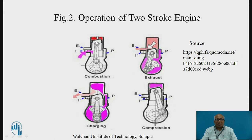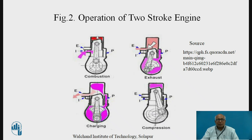Referring to the figure: near the end of compression stroke, the piston will uncover the inlet port, so inlet of fresh air (in case of CI engines) or fresh air and fuel mixture (in case of SI engine) takes place inside the crankcase. Combustion occurs at TDC and the piston is driven downwards. During its downward motion, the exhaust port opens and exhaust starts. Then the transfer port opens, and gases from the crankcase rush inside the cylinder.